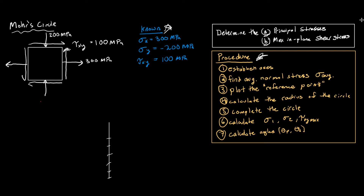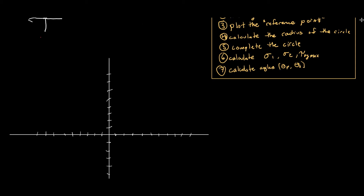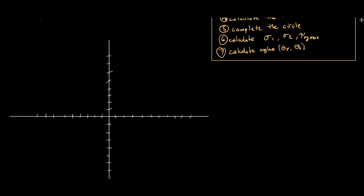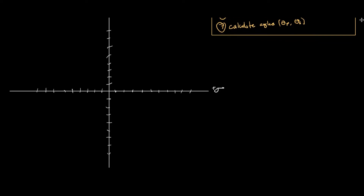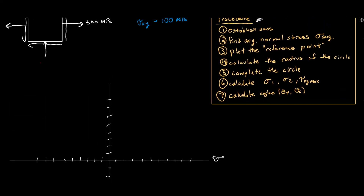To draw Mohr's circle, the first thing we need to do is establish what our axes are going to be. Over here on the x-axis we're going to have positive normal stress to the right, and we're going to have shear stress on the y-axis, but it's going to be positive down. So our shear stress — it's important to remember — is going to be positive down here. These are always what our Mohr's circle axes are going to look like.